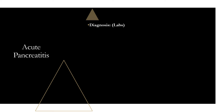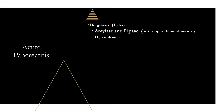The most important labs for acute pancreatitis are amylase and lipase, which will be elevated sometimes three times the upper limit of normal. Of the two, lipase is the better lab. Lipase isn't necessarily more sensitive or specific, but it stays elevated for up to 14 days, whereas amylase only stays elevated for about five days. So if a patient presents late, the amylase may be back to normal but lipase will still be elevated.